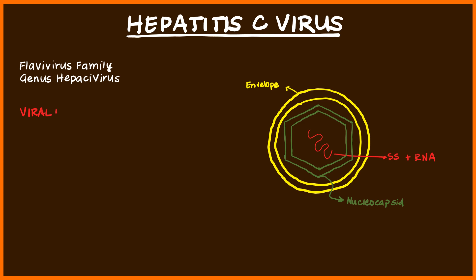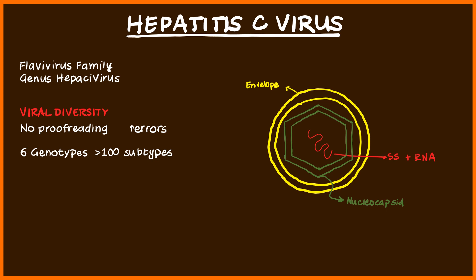Compared to other viruses, hepatitis C virus has a large amount of viral diversity. This is because when it replicates, there's no proofreading mechanism. So during replication, you get a lot of errors and a lot of mutations. This leads to a variety of different viruses, but by looking at the RNA sequencing, they are grouped into six major genotypes. And once you look at the various proteins on the structure, there are over 100 subtypes.